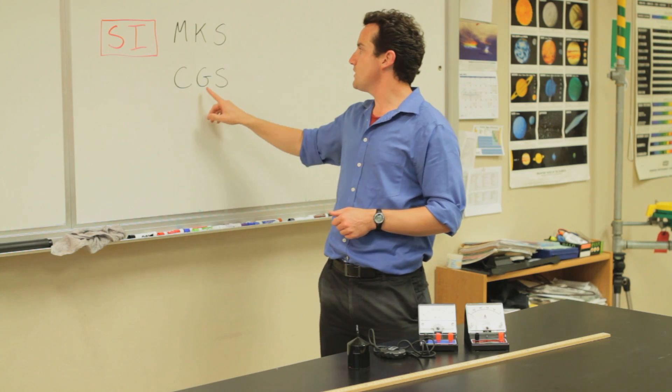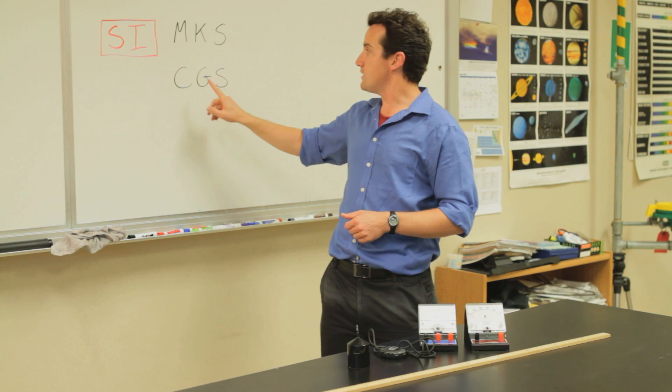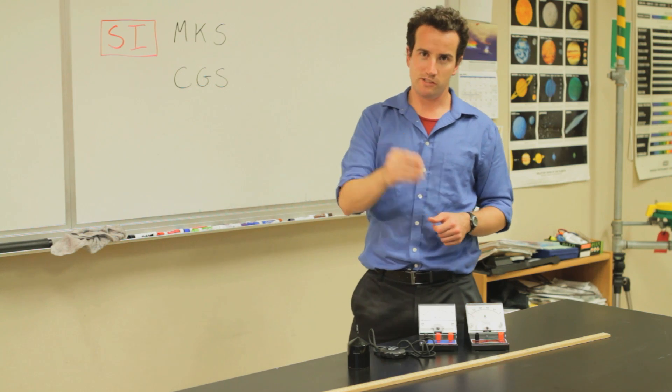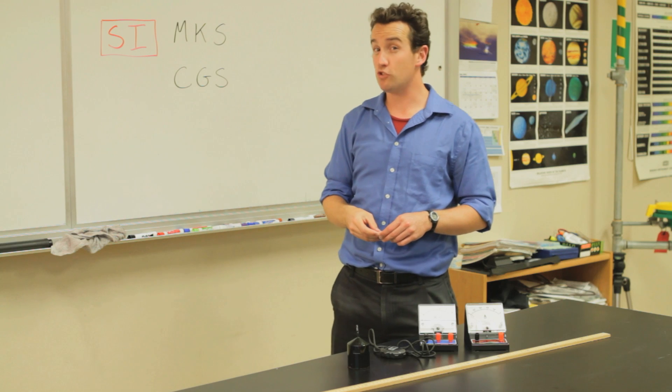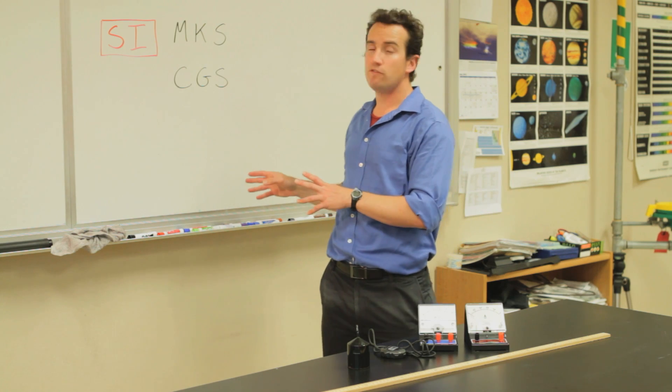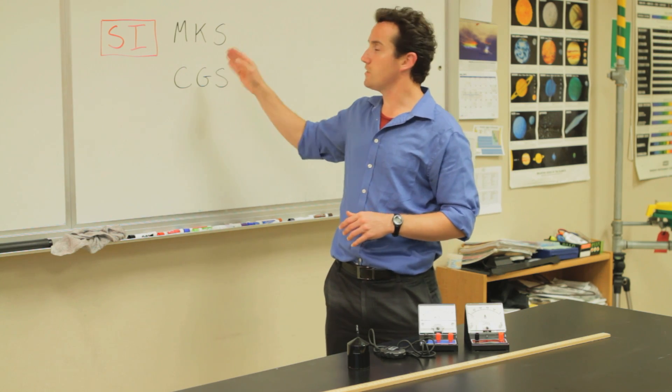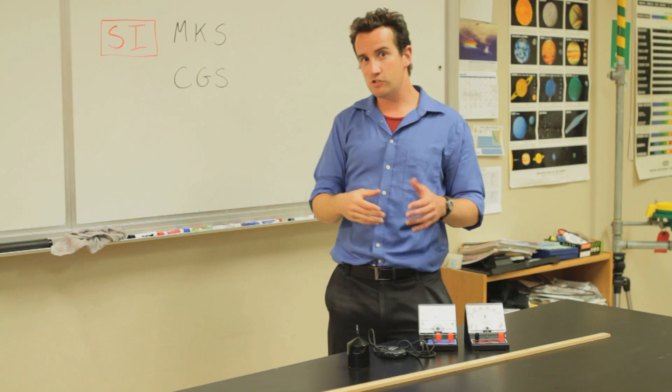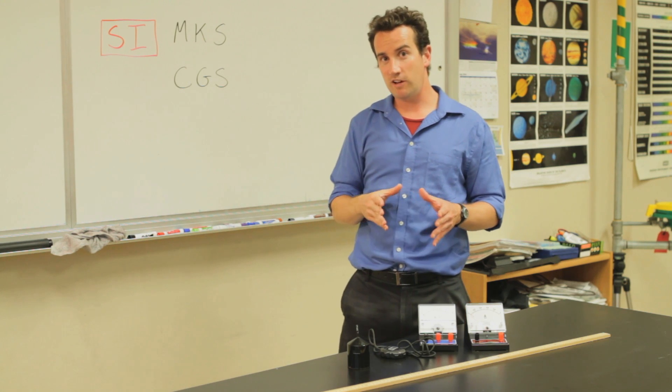We also occasionally use CGS. That stands for centimeters, grams, seconds, and that's especially common in astronomy. All units in physics can be made from meters, kilograms, and seconds, and so this unit system is very handy.